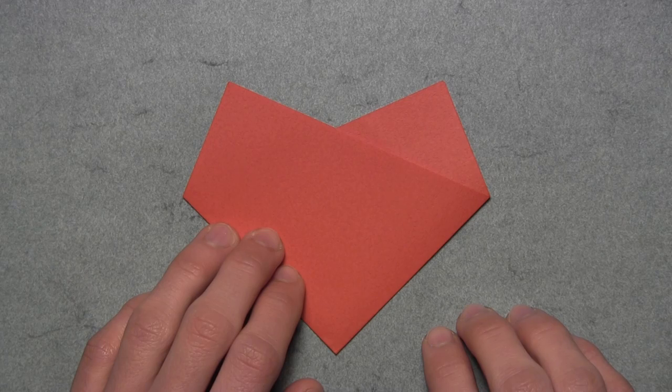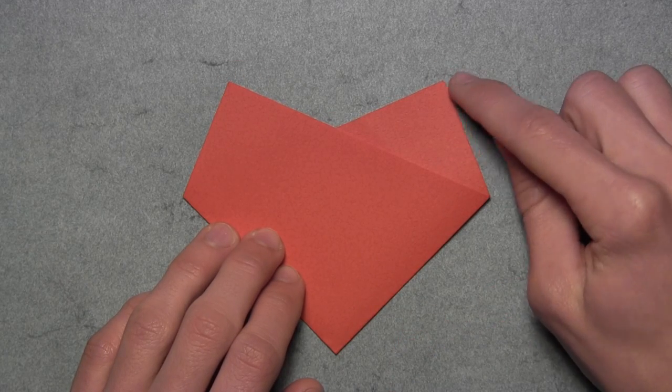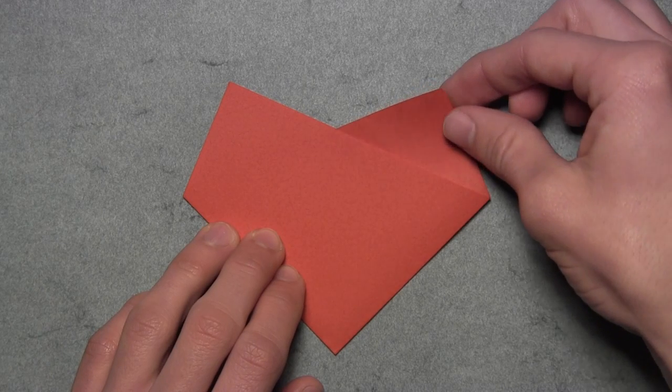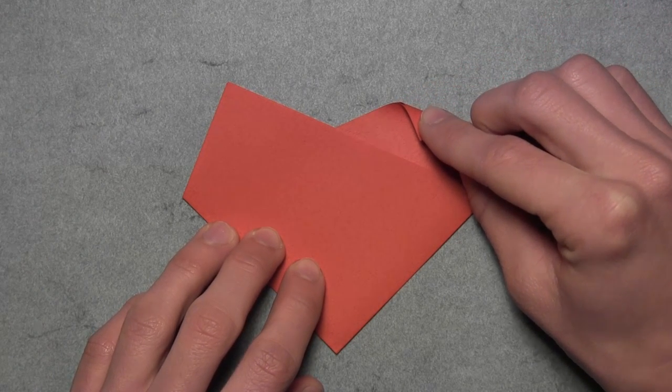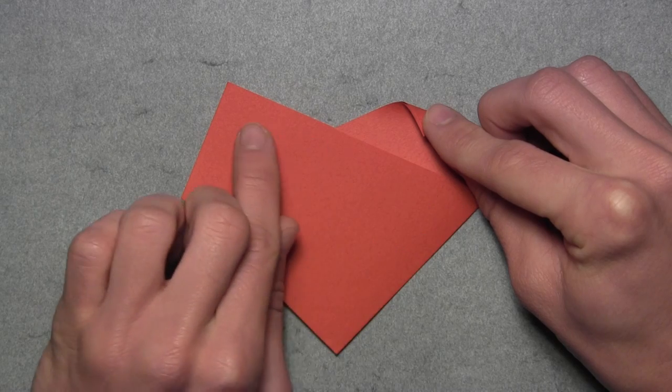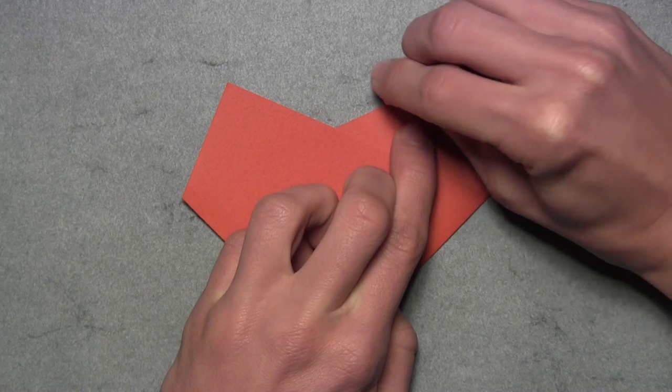Now we're going to slightly round off the shape by folding down these two top corners. We're going to start with this top right corner. Grab the two layers from behind and we're simply going to fold it down like this. I like to fold it down about halfway to this edge here, then you can make your crease.